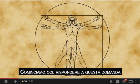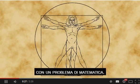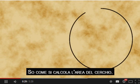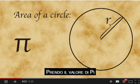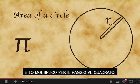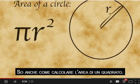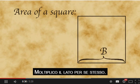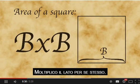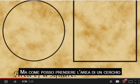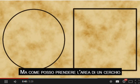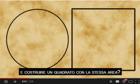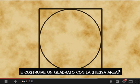Let's start to answer this question with a math problem. I know how to calculate the area of a circle — I take the value for pi and multiply it by the radius squared. I also know how to take the area of a square — I multiply the base by itself. But how can I take the area of a circle and create a square with an equal area?